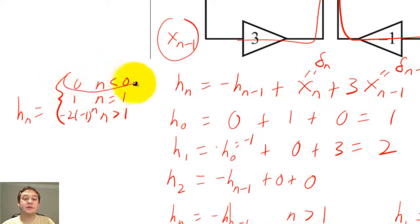Since this unit pulse response is 0 for n less than 0, the system is also a causal system.